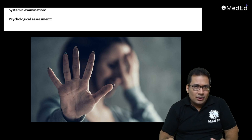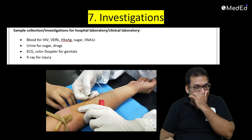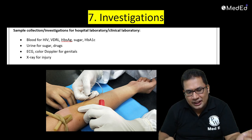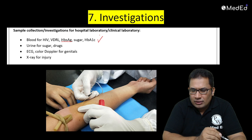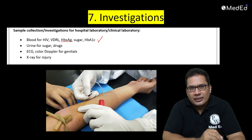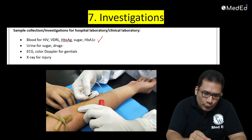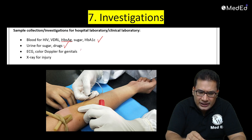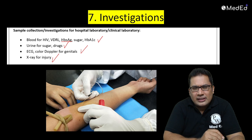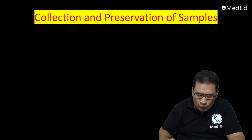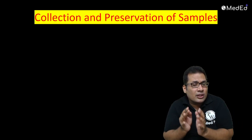Investigations for clinical laboratory include: HIV, VDRL (syphilis), Hepatitis B, blood sugar, hemoglobin, HbA1c, urine sugar, ECG, X-ray for injury, color Doppler of genitals. These are the general investigations. The key purpose of sample collection and preservation is to determine whether recent sexual intercourse occurred.